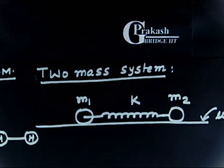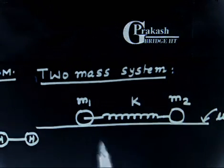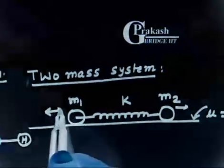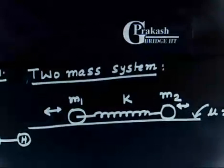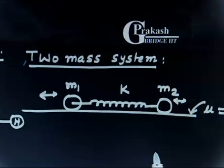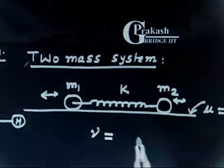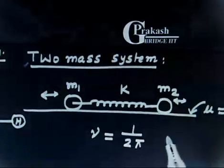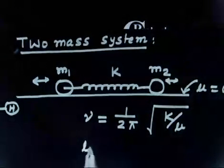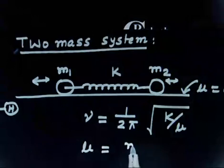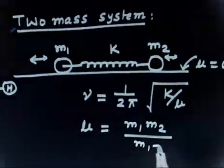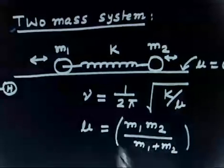The system is free to oscillate along the length of the spring — it can go back and forth in this direction. The frequency of this system is given by (1/2π) × √(k/μ), and you have to prove this, meaning you have to find omega. Here μ is called the reduced mass, given as m1·m2 divided by m1 + m2.